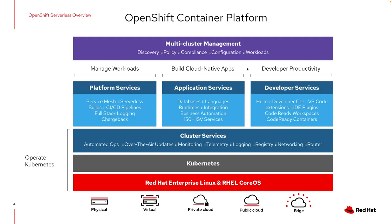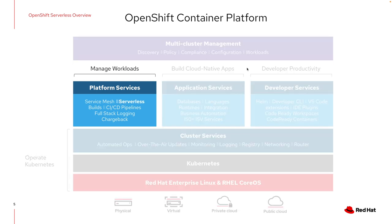Here you see the diagram of the OpenShift container platform with the operating system. There is the Kubernetes container management system, some additional cluster services, and then we have layered services on top of that — for example, the platform services. You see that OpenShift Serverless is part of the platform services, and it comes with no additional cost, it is fully supported, and it is an optional component. So you can just install it into your OpenShift environment through an operator and start with developing serverless applications.